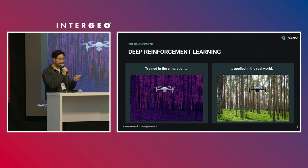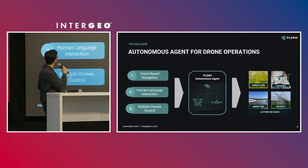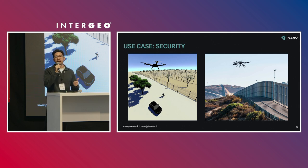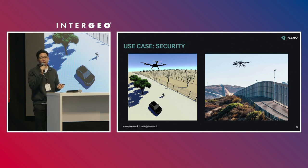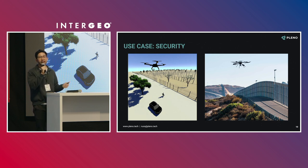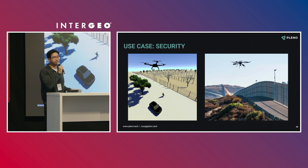Right now we have two example use cases. One of them is security — for example detecting humans and cars across borders. You can train the models by actually flying to those areas, but by doing it in simulations you can save time, save resources, and end up with a better model to perform the tasks you need.